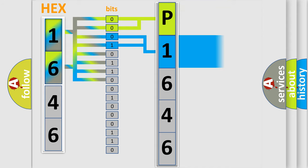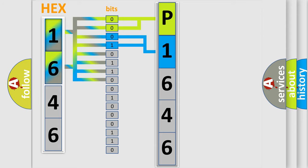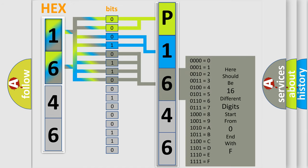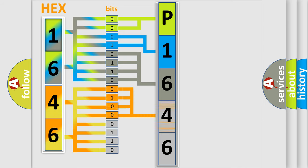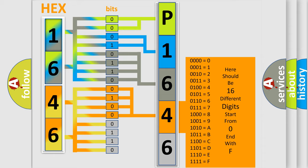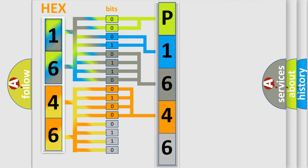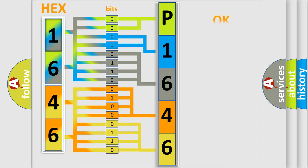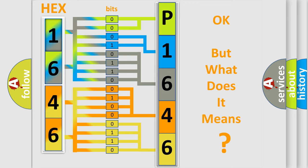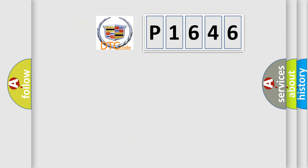The next two bits determine the second character. The last bits of the first byte define the third character of the code. The second byte is composed of a combination of eight bits. The first four bits determine the fourth character, and the combination of the last four bits defines the fifth character. A single byte conceals 256 possible combinations. We now know in what way the diagnostic tool translates the received information into a more comprehensible format. The number itself does not make sense to us if we cannot assign information about what it actually expresses.